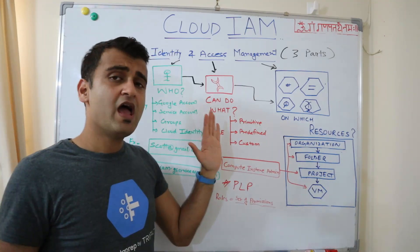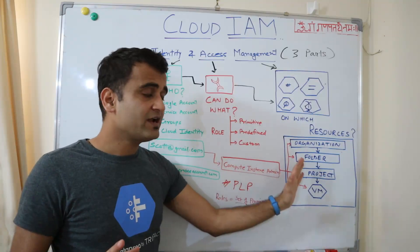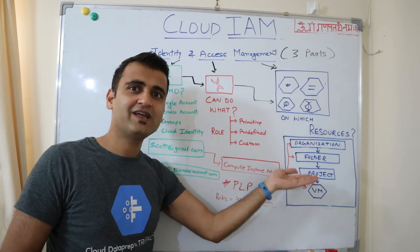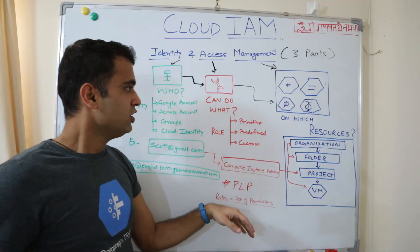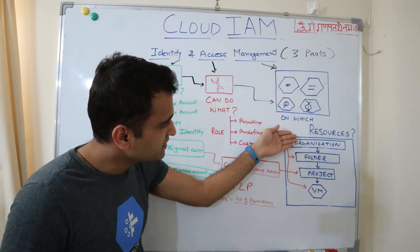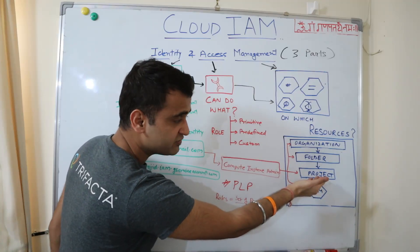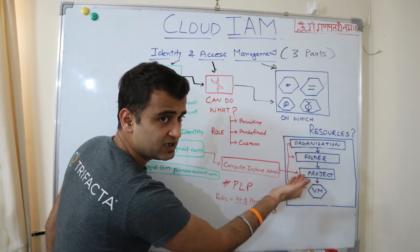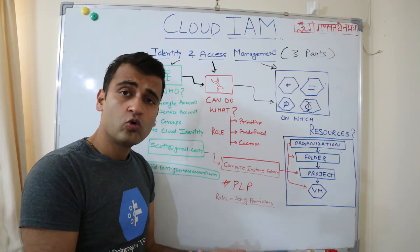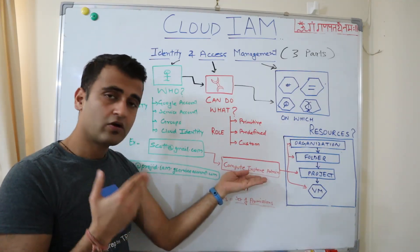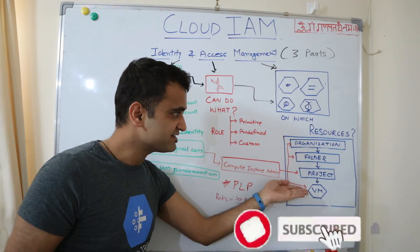Now coming to resources: when I talk about resources, this is your library, your cafeteria, your office area. Based on what roles you are assigned, you get more and more access. Similarly, these are your Google Cloud resources, and this is called the resource hierarchy. On top you have your organization; under that you can have one or multiple folders; within one folder, one or multiple projects; and within one project, one or multiple resources like compute engine or storage. When you get a role, the access will depend on which level you are assigning that role.